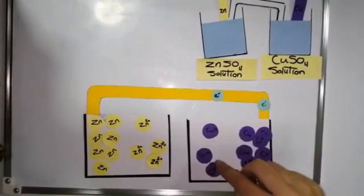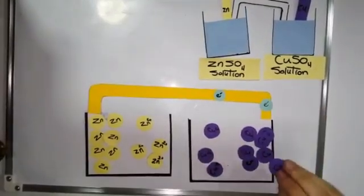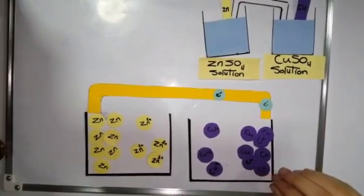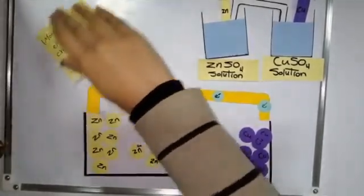And copper ion gains two electrons and it changes to copper atoms. And this is how moving of the electrons can create electricity.